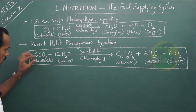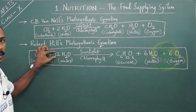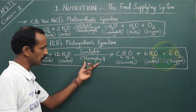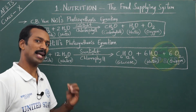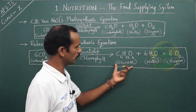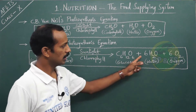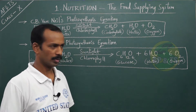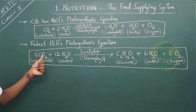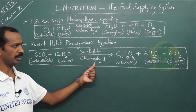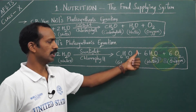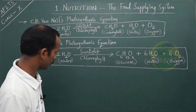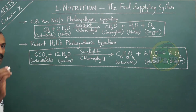According to Robert Hill's equation, 6 molecules of carbon dioxide with 12 molecules of water, in the presence of sunlight and chlorophyll, are utilized by plants to produce one molecule of glucose (C₆H₁₂O₆), 6 molecules of water, and 6 molecules of oxygen. So: 6CO₂ + 12H₂O → C₆H₁₂O₆ + 6H₂O + 6O₂. This is the original and real equation for photosynthesis.